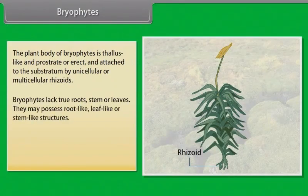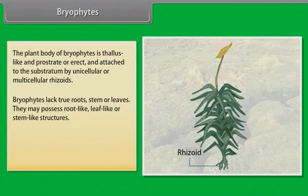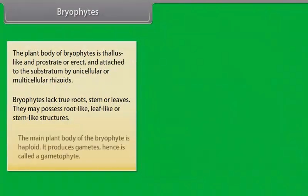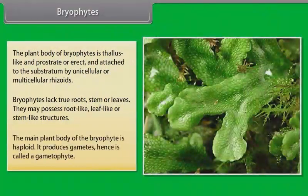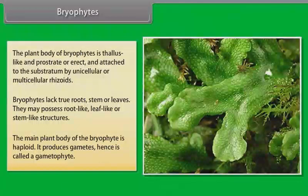Bryophytes lack true roots, stem, or leaves — they may possess root-like, leaf-like, or stem-like structures. The main plant body of the bryophyte is haploid; it produces gametes and hence is called a gametophyte.